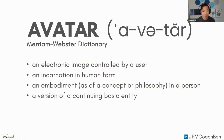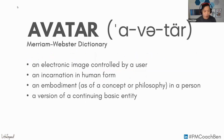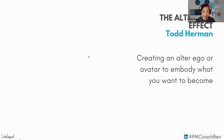First, let's define what an avatar is. Based on the Merriam-Webster dictionary — a condensed version — it's looking at an electronic image controlled by a user, an incarnation in human form, an embodiment of something inside of a person, or a version of a continuing basic entity. Think of it like a video game where you create characters with different skill sets and play as them. This is characterized by Todd Herman's book 'The Alter Ego Effect,' where you create an alter ego or avatar to embody what you want to become.